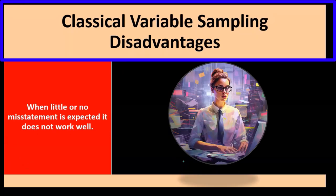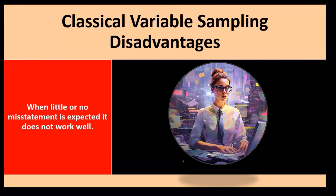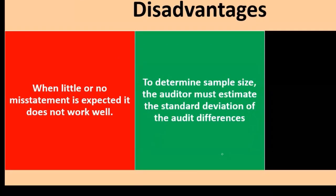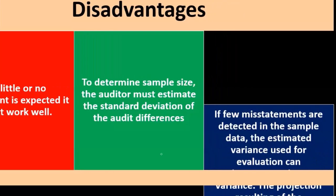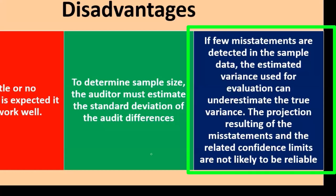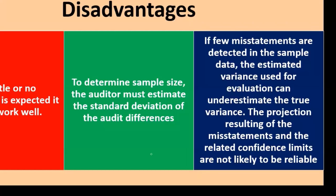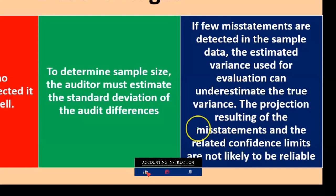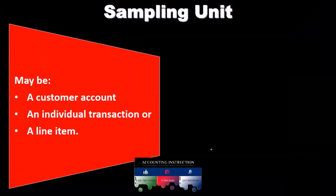Classical variable sampling disadvantages: when little or no misstatement is expected, it does not work well. To determine sample size the auditor must estimate the standard deviation of the audit differences, and any estimate increases the risk of complications. If few misstatements are detected in the sample data, the estimated variance can underestimate the true variance, making the projection of misstatements and the related confidence limits unreliable under those conditions.